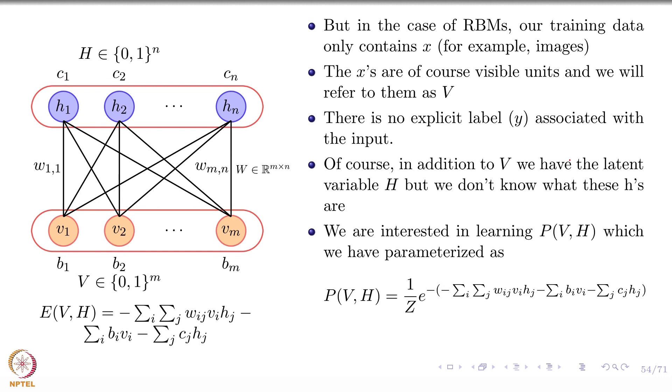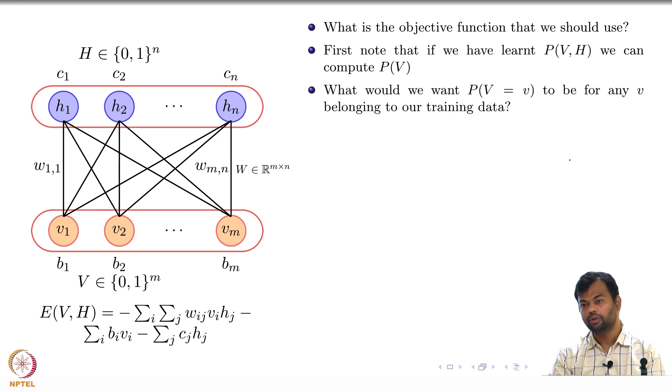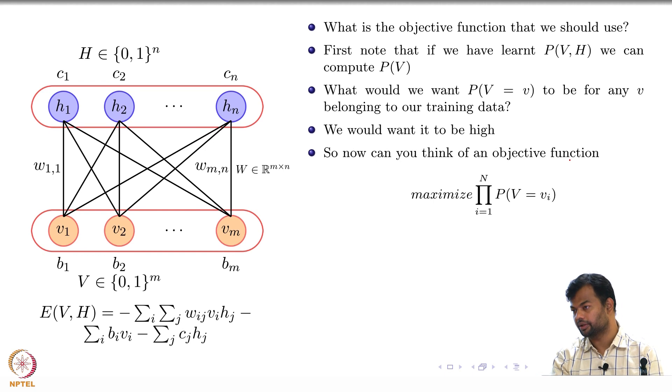So this is what P of V comma H is. If you have learned P of V comma H, we can compute P of V from it. We'd want to know what P of V is equal to V for any V belonging to our training data, and we would want it to be high. So that's what our objective function is going to be: for all the capital N training examples that you had, maximize the probability of that particular training example.